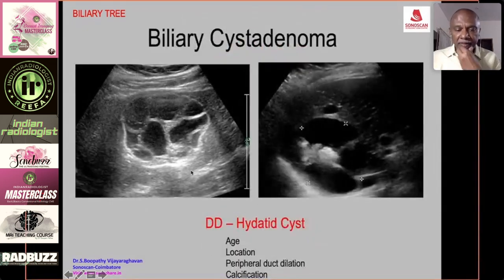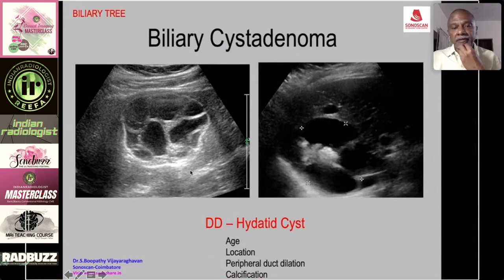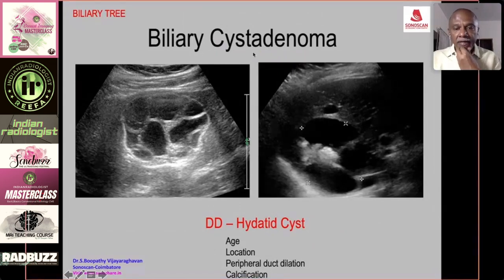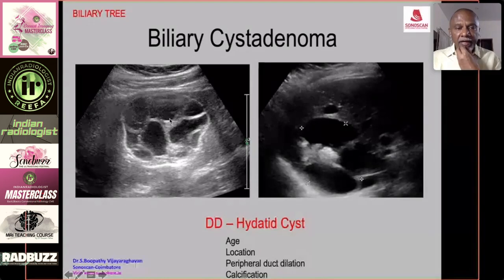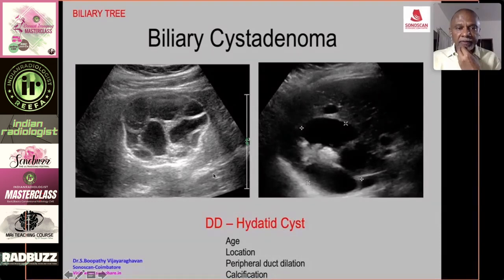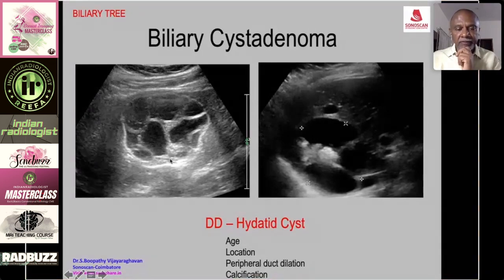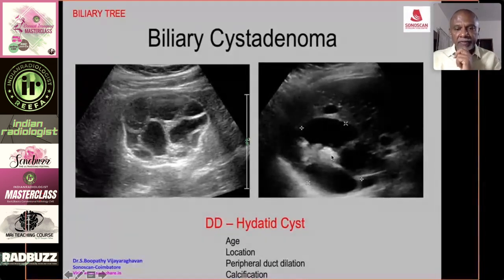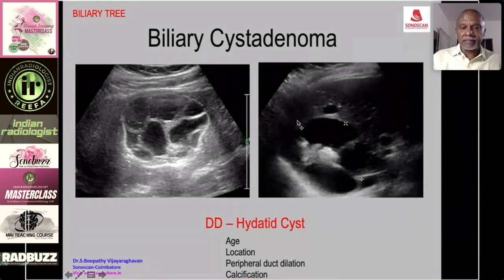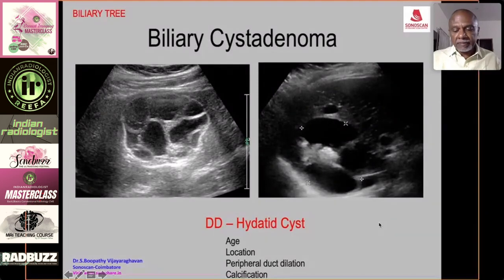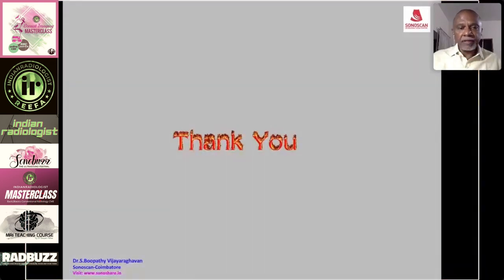A rare cause is biliary cystadenoma — a tumor of the bile duct presenting as a multi-septated cystic mass, particularly in children. It must be differentiated from hydatid cyst: biliary cystadenoma occurs in children (hydatid in middle to later age), is located more towards the hilum, may show peripheral duct dilatation due to obstruction, and calcifications within the cyst — whereas in hydatid cyst, calcification is peripheral.